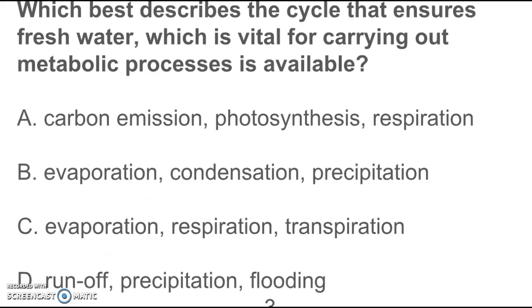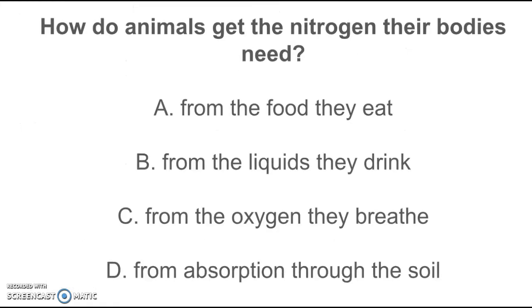Which best describes the cycle that ensures fresh water is available? Evaporation, condensation, precipitation: the water cycle. How do animals get the nitrogen their bodies need? We're consumers, so we got to eat it.